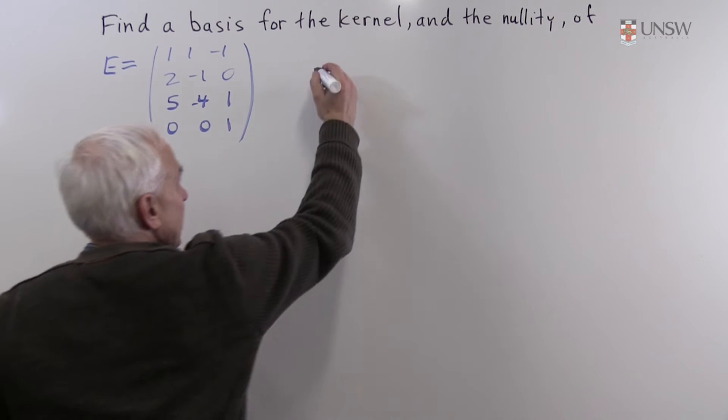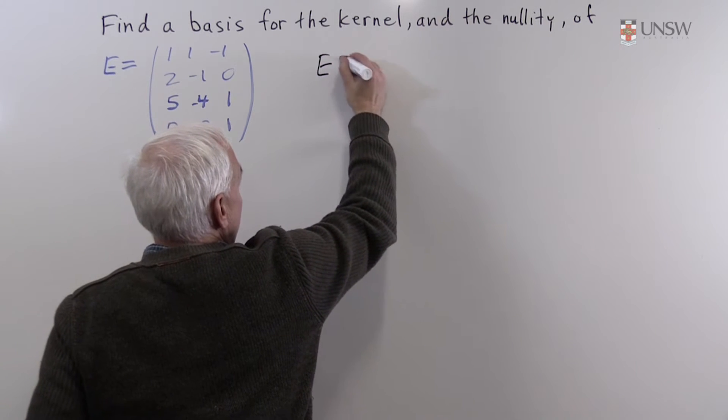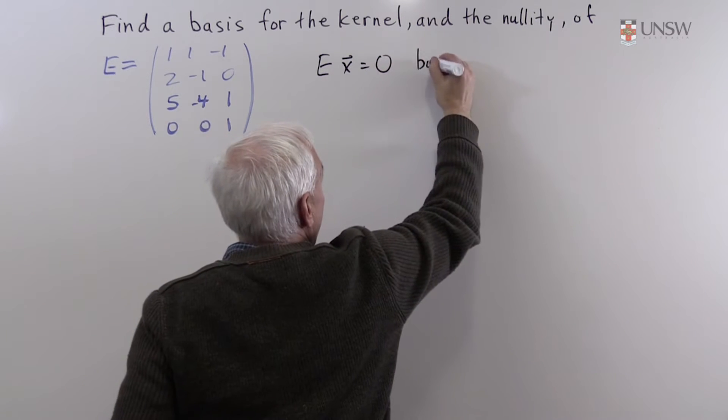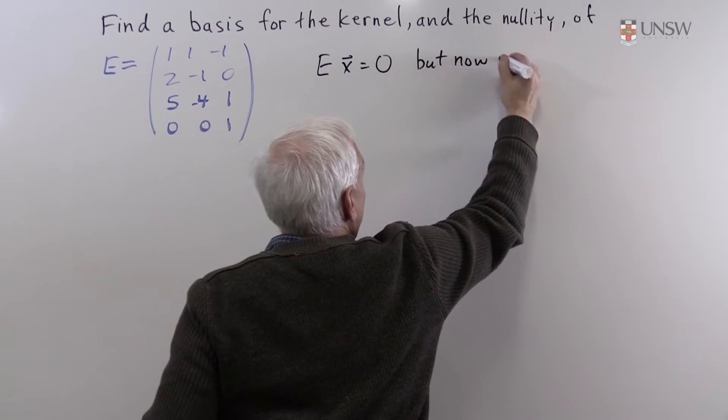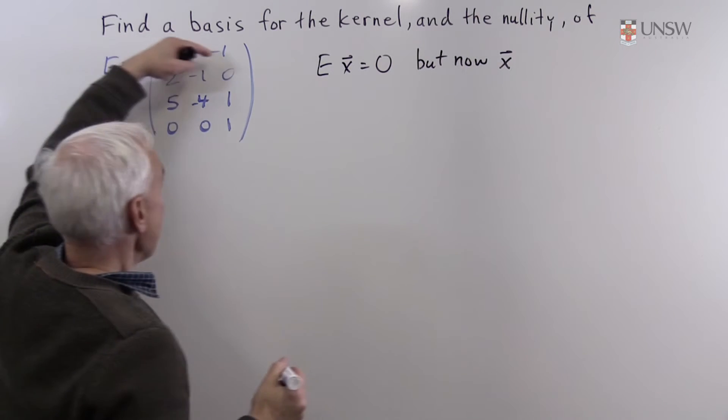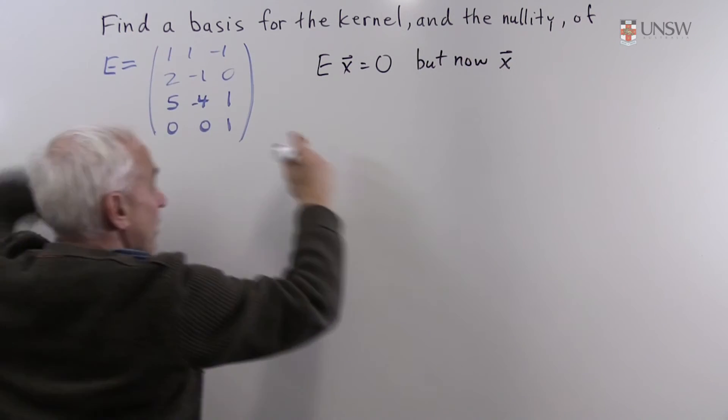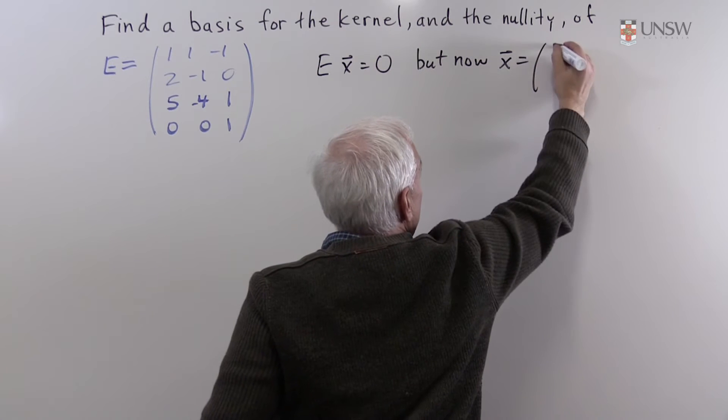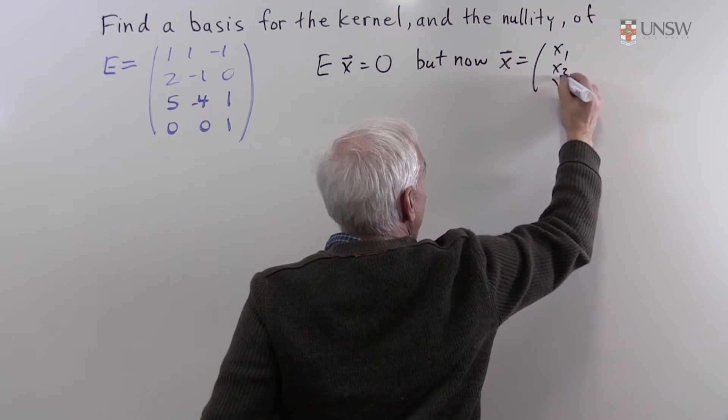Now we're interested in still solving the equation Ex equals 0, but now X is a vector with 3 components, because that's the only way you can multiply sensibly. So X will be a vector of the form X1, X2, X3.